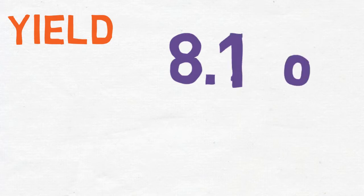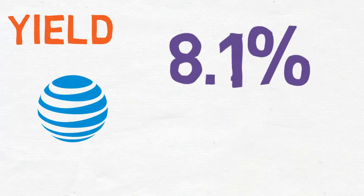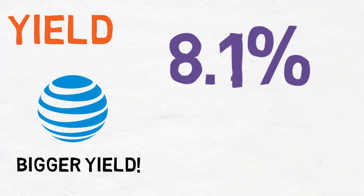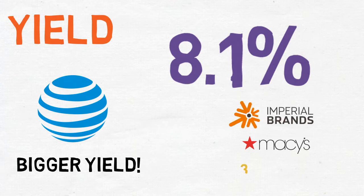Firstly, the yield. At the time of buying, BT's yield was 8.1%. This is a high yield for this sector, even bigger than AT&T when I originally bought that company. And it's on the top ends of the portfolio. I might be wrong, but I think only Macy's and Imperial brands have a higher yield so far.